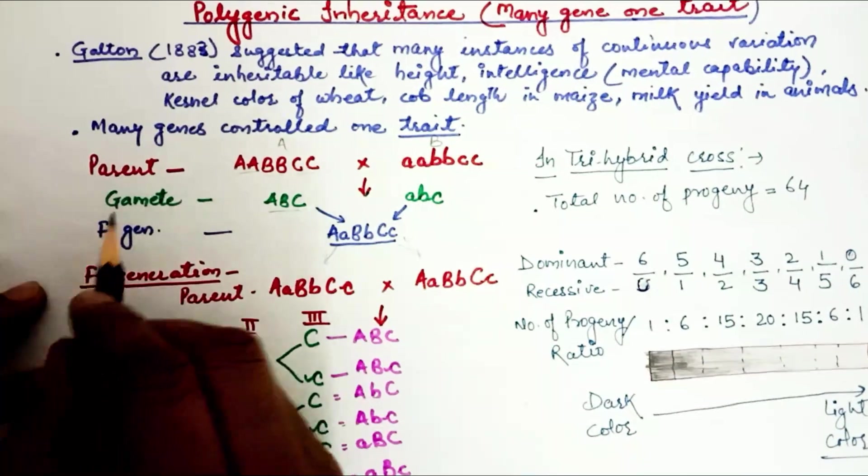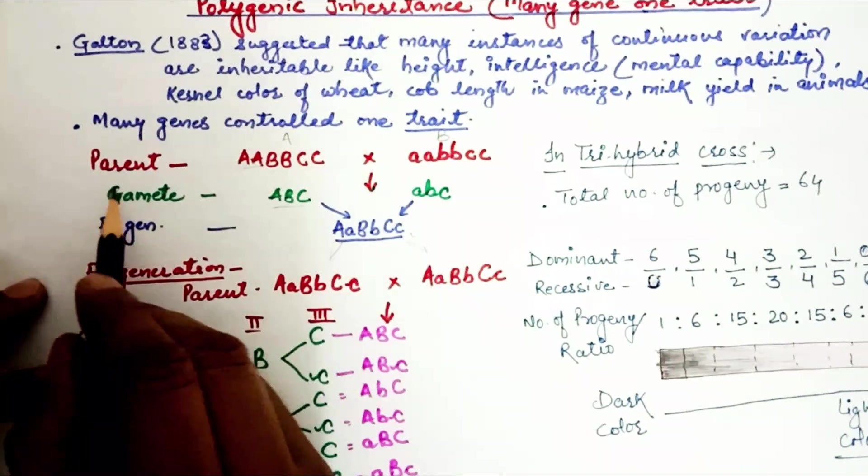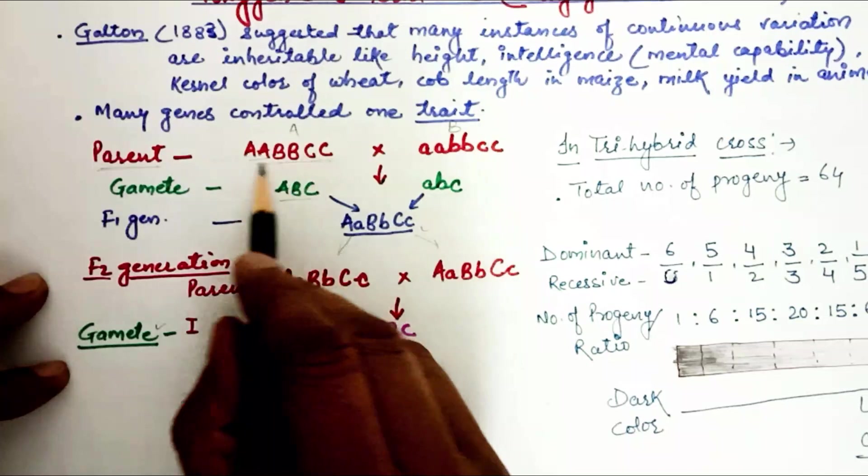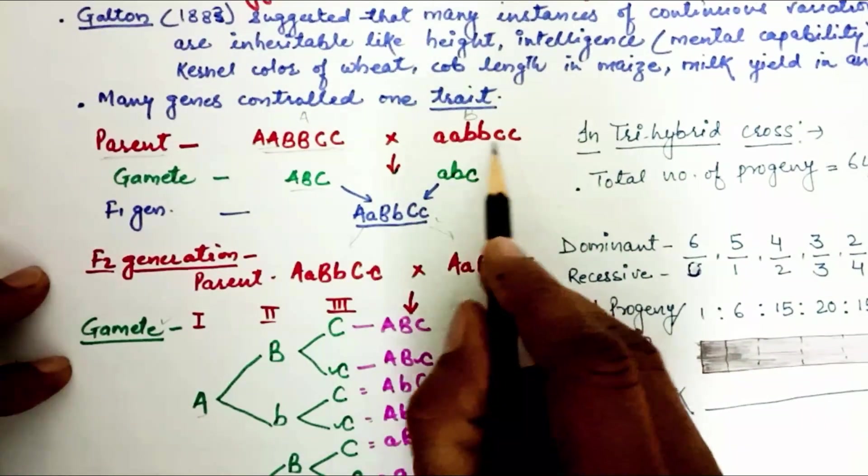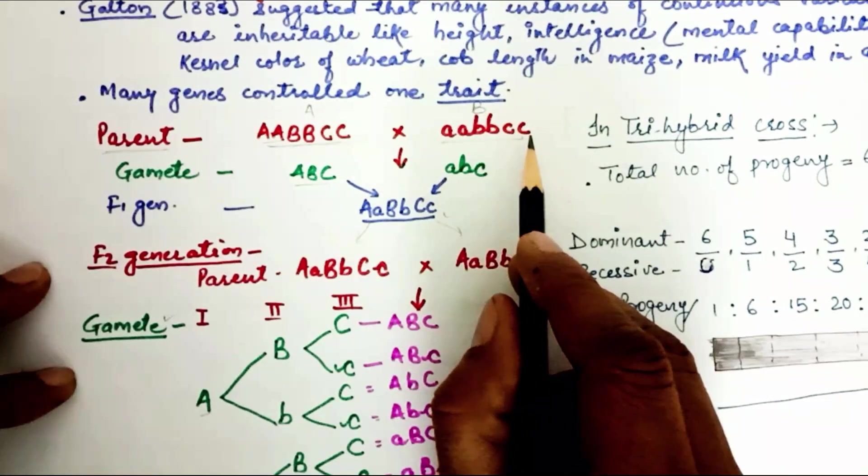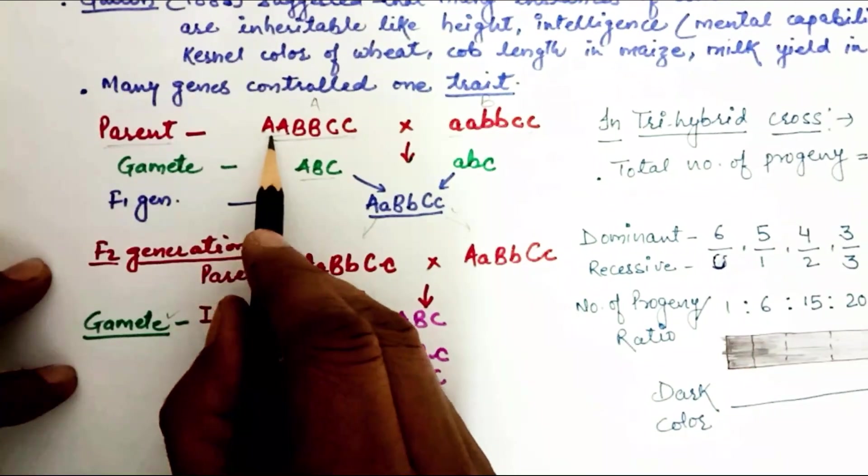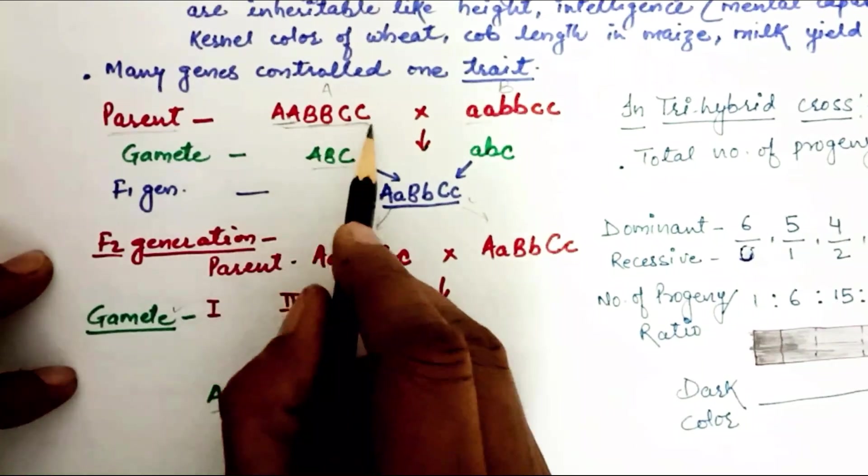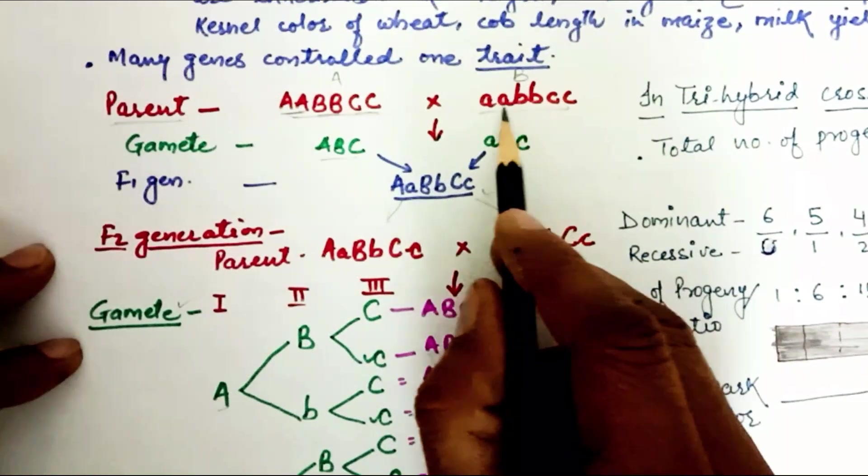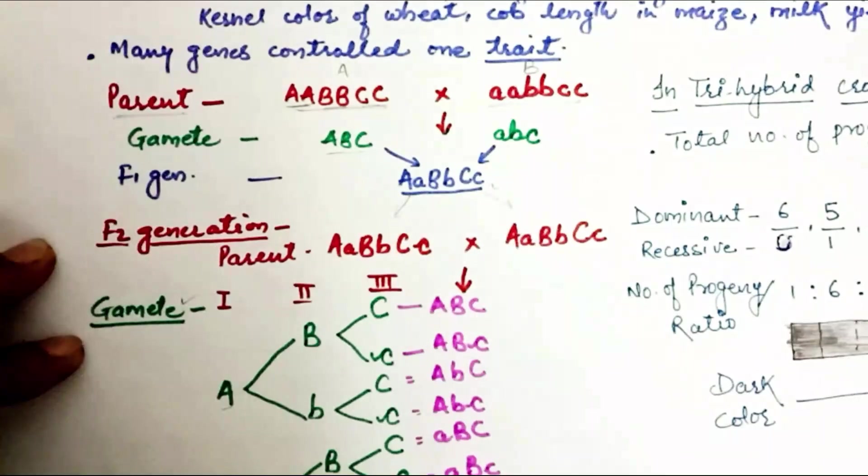This topic is called Cross. We have to take a parent, this parent is homozygous dominant, and the other parent is homozygous recessive. This is three genes: gene A, B, and C. In three genes, six alleles are present. It's also three genes, six alleles are present.